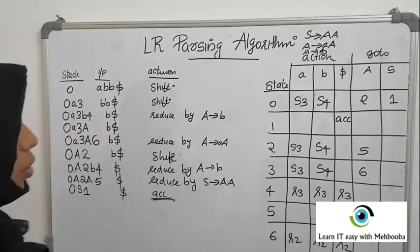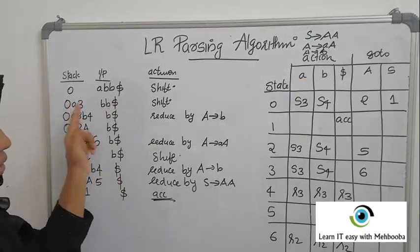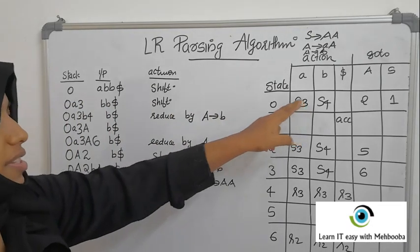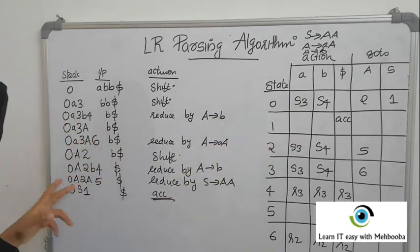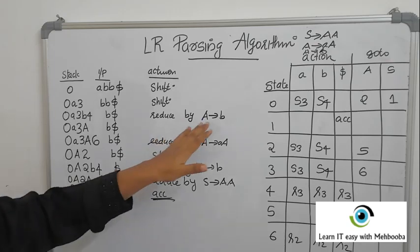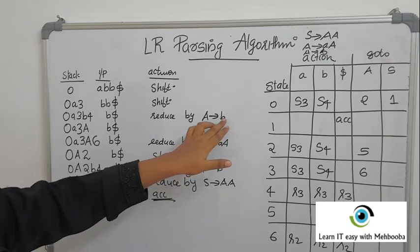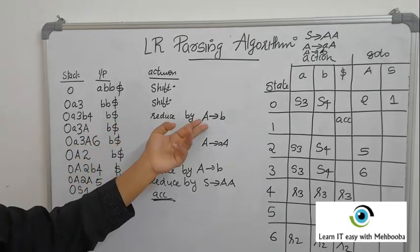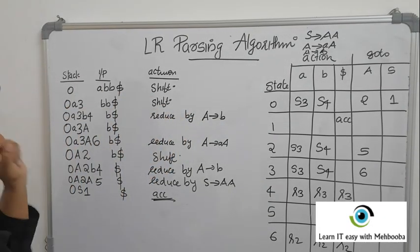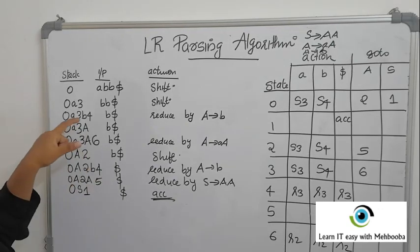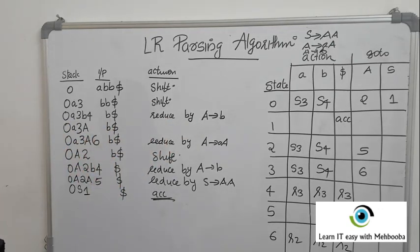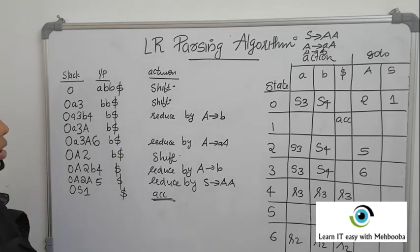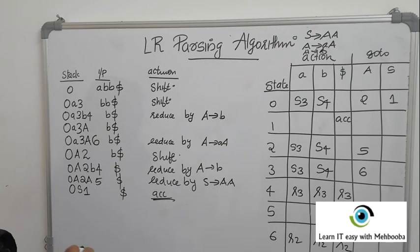To summarize the algorithm: when you see a shift action, shift the current input symbol onto the stack and also push the following state number. When you get a reduce move, pop 2 times the number of characters on the right-hand side off the stack, push the left-hand side symbol, and apply the GOTO action on the current top state with the symbol just pushed. This algorithm is the same for all three — SLR, CLR, and LALR parsing.